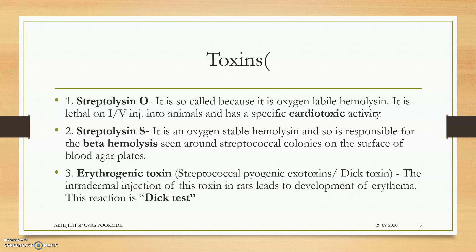Streptolysin O has cardiotoxic activity and is oxygen labile — meaning oxygen can break the toxin. The second one is Streptolysin S, which is oxygen stable. This distinction was commonly tested in exams. Streptolysin S is actually the beta-hemolysin.